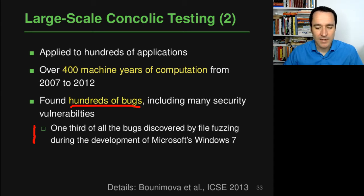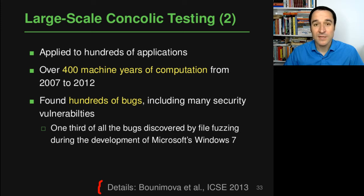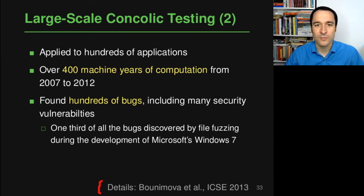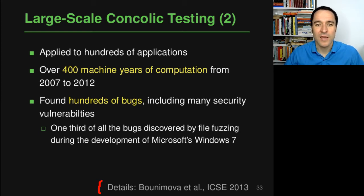If you're interested in more details, there's a nice paper that appeared at ICSI a couple of years ago that describes this whole experience of running concolic execution on a large set of real-world applications and how the different bugs were discovered by doing that.